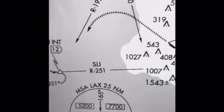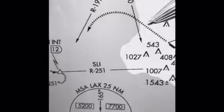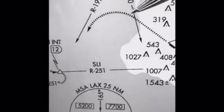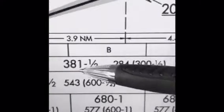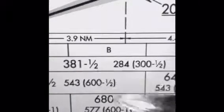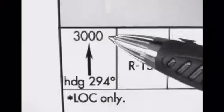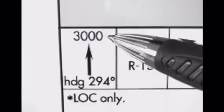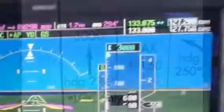Preparing for the missed approach begins with a thorough approach briefing. Once familiar with the missed approach procedure, ensure the minimums are set in the minimums bug, and the initial level-off altitude is placed in the altitude selector on the primary flight display.